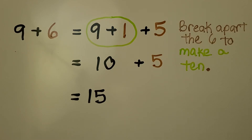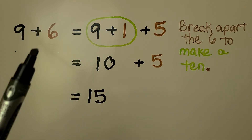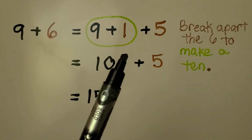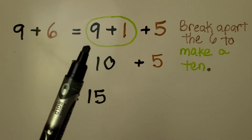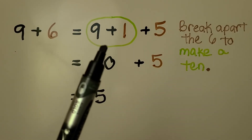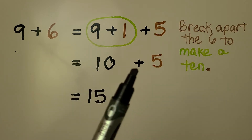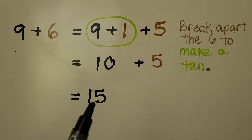Here we have 9 plus 6. We break apart the 6 as a 1 plus 5. We can make a 10 with the 9 plus 1. Now we have 10 plus 5. That's equal to 15.